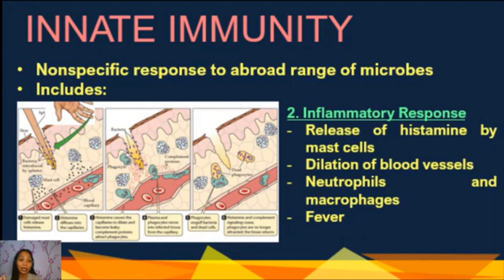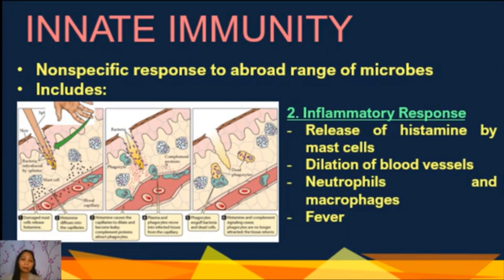In the inflammatory response, damaged cells trigger mast cells to release histamines. Histamine causes blood vessels to dilate and become more permeable, so white blood cells move into the damaged area. The white blood cells engulf and destroy bacteria and damaged cells. Inflammation is characterized by fever, redness, swelling, pain, and loss of function in the infected area.